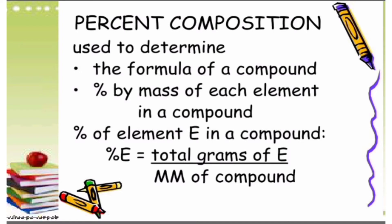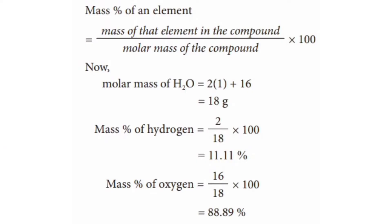First, we write: percentage of an element = total grams of element divided by molecular mass of compound. This formula identifies the percentage of each element present in a water molecule. Mass percentage of an element = mass of that element in the compound divided by molecular mass of the compound, times 100. The molar mass of water: we have 2 hydrogen atoms, so 2 × 1 = 2, plus oxygen = 16. Total molecular mass = 18 grams.